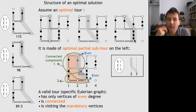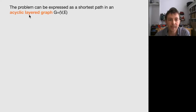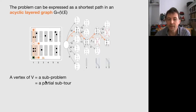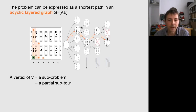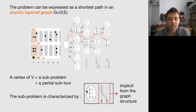To better understand what we are going to do, here is a glimpse of the end result. We are trying to express the problem as the shortest path in an acyclic layered graph — it works the same for both the rectilinear TSP and the picking problem. A vertex in this graph is a subproblem, a partial subtour, represented with the characteristics we already mentioned. The position of the separator is implicit from the graph structure.